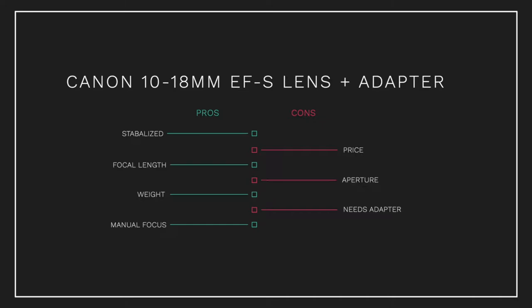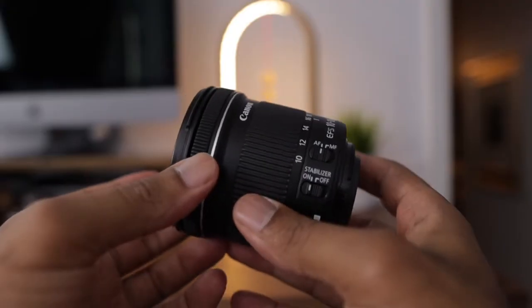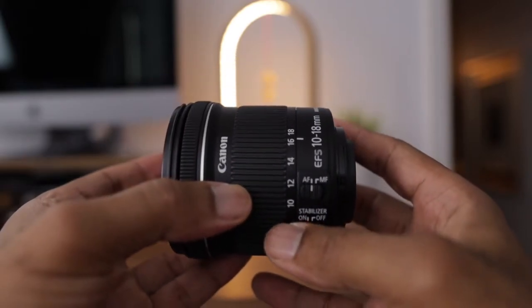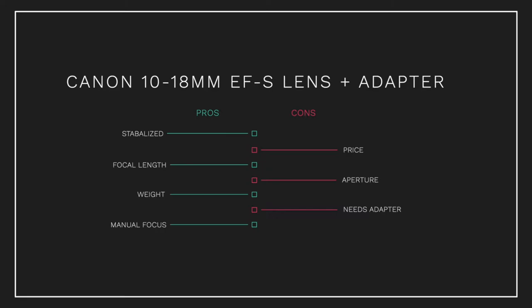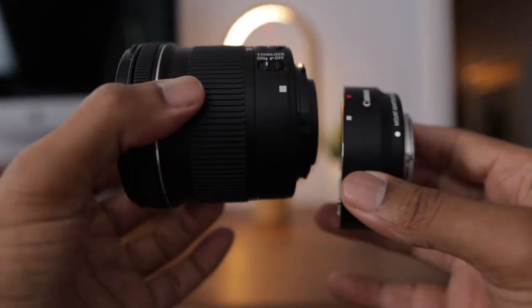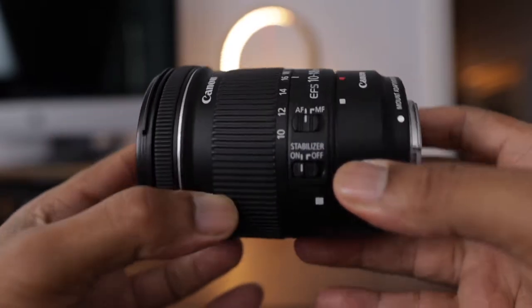For the Canon EF-S 10 to 18 millimeter, the pros include stabilization, a weight of 240 grams which is middle of the pack, the widest angle focal length, and a manual focus option with a focus ring. The cons: a maximum aperture of f/4.5, and while the lens is $279, you also need the Canon adapter which is $159, making the total $438.